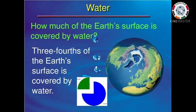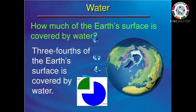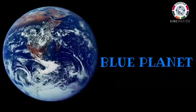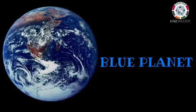Three-fourths of the Earth is covered with water. That is, about 70% of Earth's surface is covered with water. This makes it appear blue from space. That is why the Earth is also known as the blue planet.